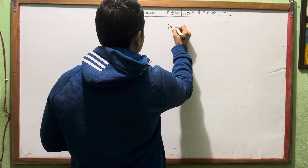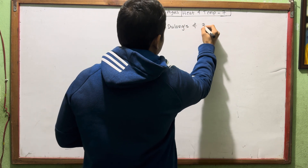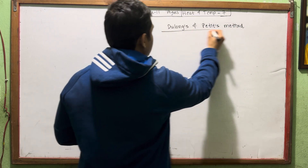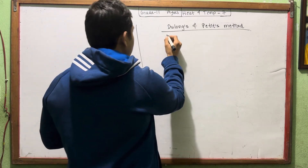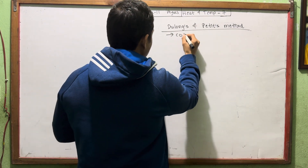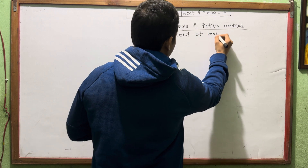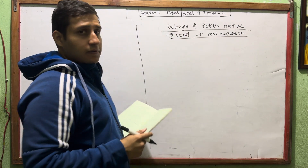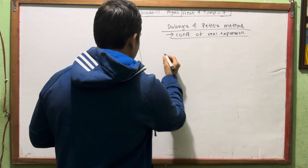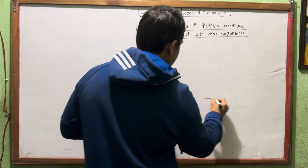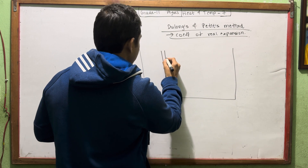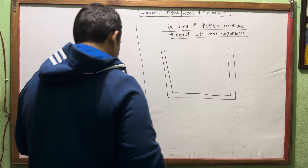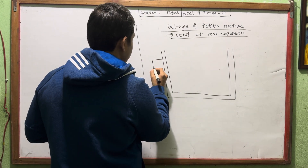I am thinking about this chapter and giving everyone a lot of important long questions. Now I am thinking about the Dulong and Petit experiment on real expansion. Let's make a diagram.